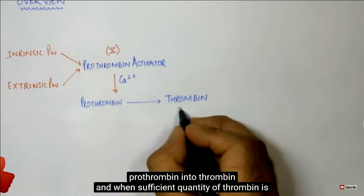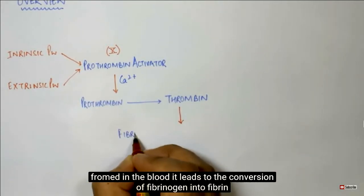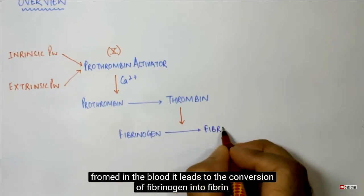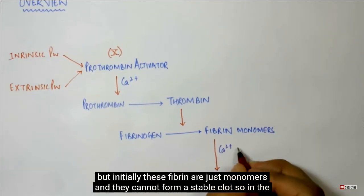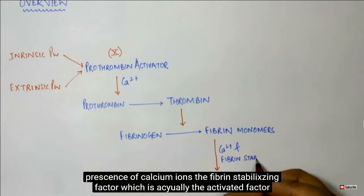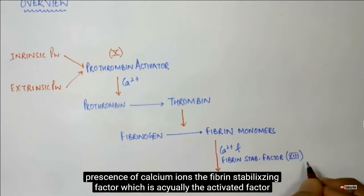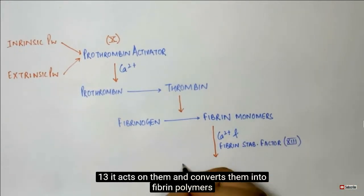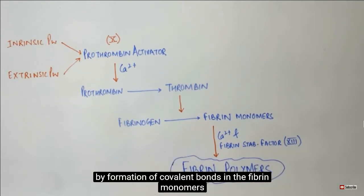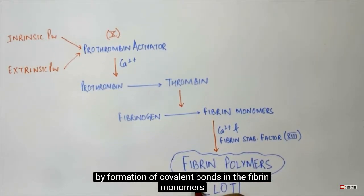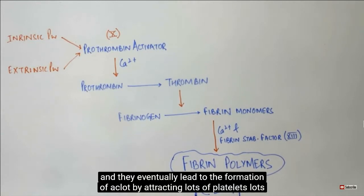When sufficient quantity of thrombin is formed in the blood, it leads to the conversion of fibrinogen into fibrin. But initially, these fibrin are just monomers and they cannot form a stable clot. So, in the presence of calcium ions, the fibrin stabilizing factor, which is actually the factor number 13, acts on them and converts them into fibrin polymers by formation of covalent bonds in the fibrin monomers. And eventually, they lead to the formation of a clot.